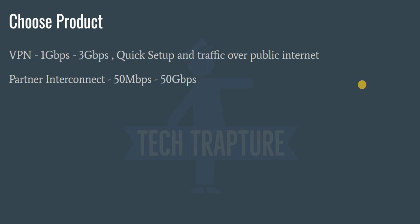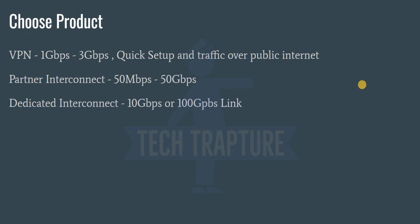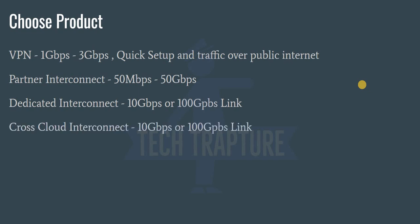For Interconnect, there are three options. Partner Interconnect supports speeds from 50 Mbps to 50 Gbps — you involve a third-party service provider with a physical link from your on-premises network through the service provider to Google Cloud. Dedicated Interconnect is a direct physical cable from your on-premises data center to a Google Cloud edge location, with link options of 10 Gbps or 100 Gbps. Cross-Cloud Interconnect is a new service to connect from one cloud provider like Google Cloud to another such as AWS, Azure, Oracle, or Alibaba Cloud.